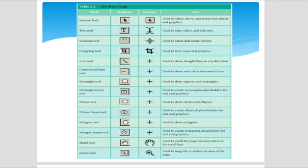The constrain line tool is used to draw vertical and horizontal lines. The rectangle tool is used to draw squares and rectangles. The rectangle frame tool is a placeholder for text and graphics. The ellipse tool is used to draw circles and ellipses, and the ellipse frame tool creates an elliptical placeholder for text and graphics. The polygon tool draws polygons, and the polygon frame tool creates a polygon placeholder. The hand tool is used to scroll the page as an alternative to the scroll bar. The zoom tool is used to magnify or reduce the view area.